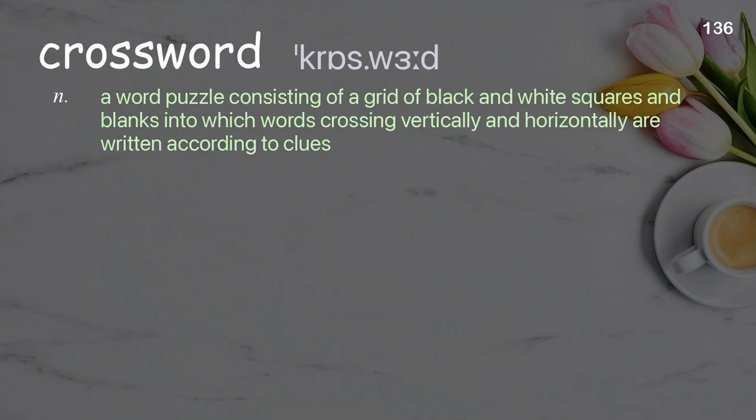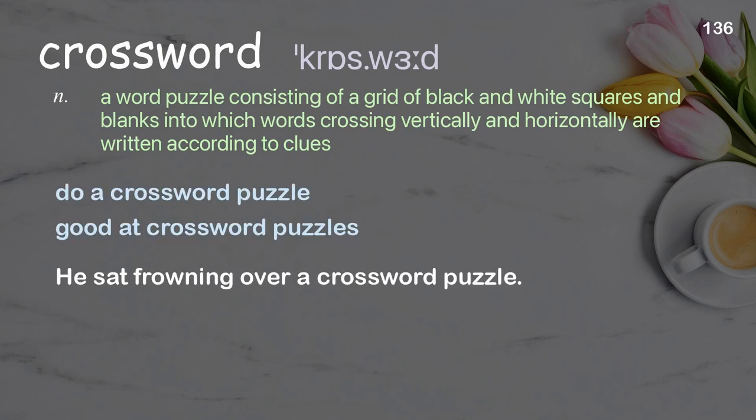Crossword: a word puzzle consisting of a grid of black and white squares and blanks into which words crossing vertically and horizontally are written according to clues. Examples: do a crossword puzzle, good at crossword puzzles. He sat frowning over a crossword puzzle.